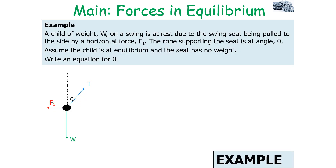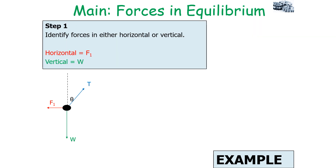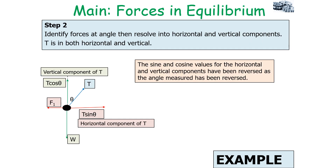An example question: a child of weight W on a swing is at rest, with the swing pulled to the side by a horizontal force F1. The rope supporting the seat is at an angle theta. Assuming the child is in equilibrium and the seat has no weight, write an equation for theta. First, draw the free body diagram of all forces. Then identify F1 acting only horizontally and W acting only vertically.